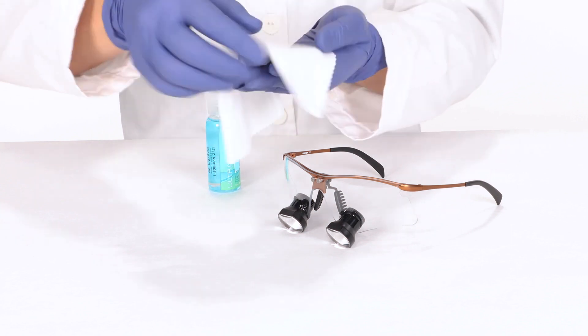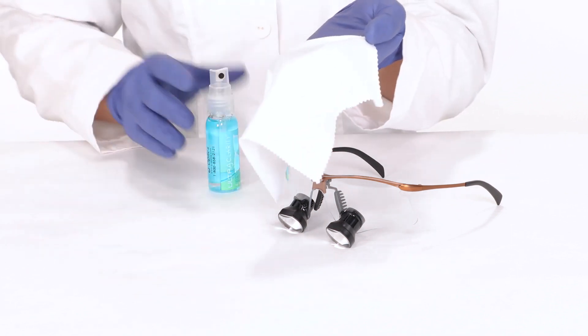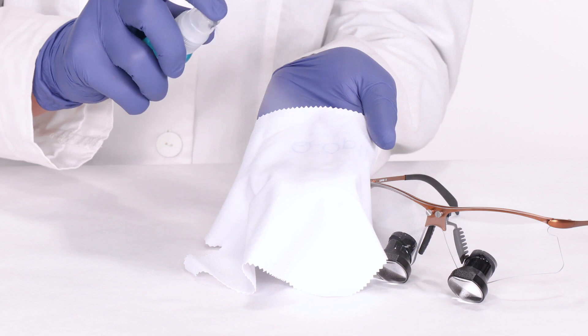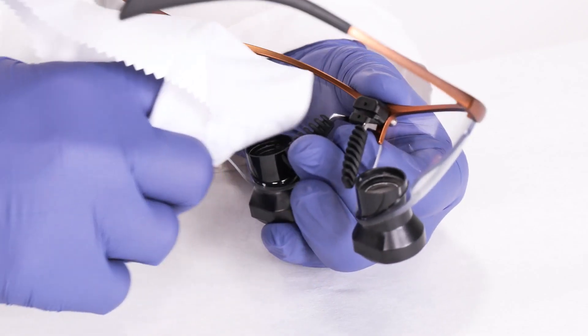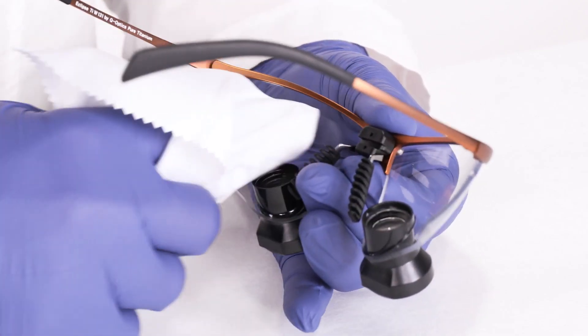Once you've thoroughly cleaned or disinfected your loops, be sure all the excess liquid or streaking is removed with your microfiber lint-free cloth over all of the surfaces including the frame and temple arms.